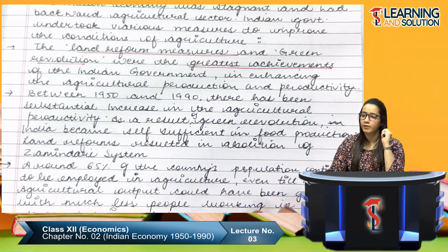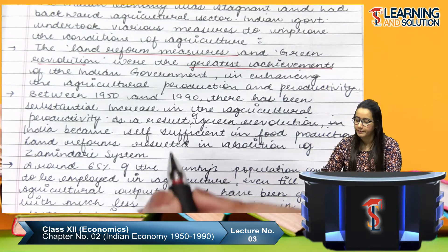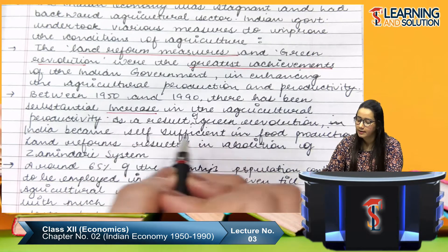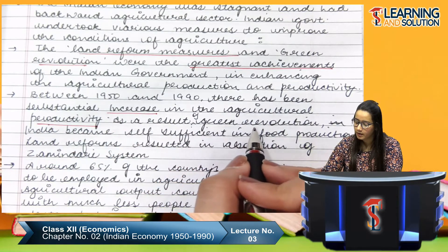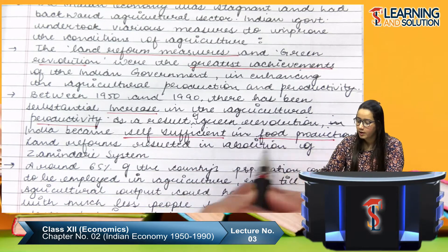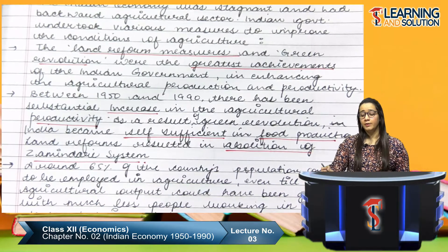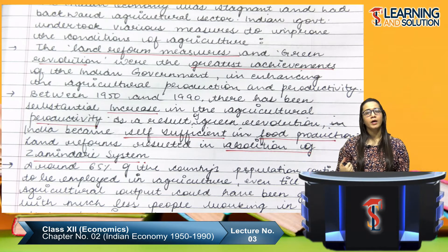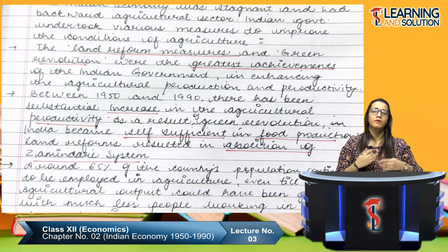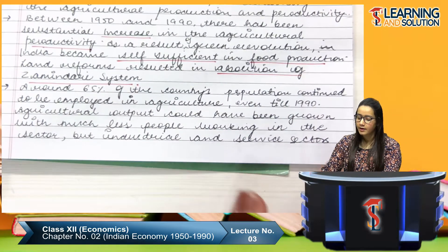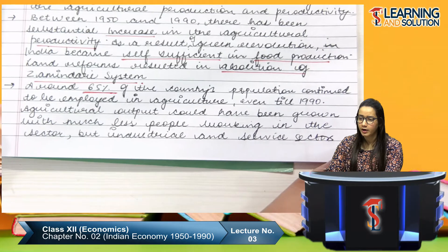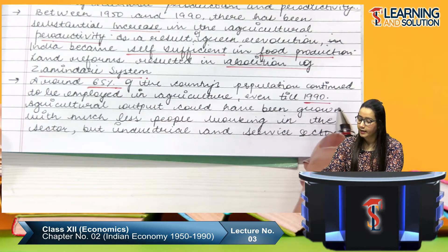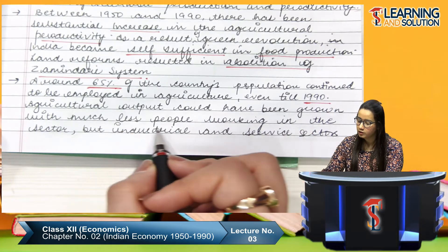Between 1950 and 1990 there was a substantial increase in agriculture productivity. As a result of the green revolution, India became self-sufficient in food production. Land reform resulted in the abolition of the zamindari system. However, around 65% of the country's population continued to be employed in agriculture even till 1990. Agricultural output could have grown with much less people, but the industrial and service sector were not able to absorb the extra people — there was a lot of disguised unemployment in the agriculture sector.